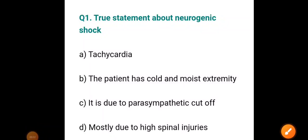Hello friends, today we are going to discuss high-yield NEET PG MCQs. All five options are true statements about neurogenic shock: tachycardia, patient has cold and moist extremity, it is due to parasympathetic cutoff, or mostly due to high spinal injuries.